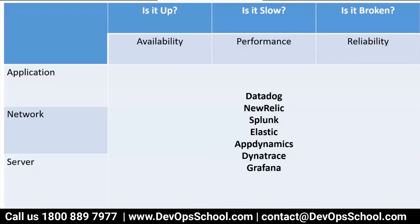The solutions available in the market for setting up observability cover application availability, network availability, server availability, application performance, application reliability, network performance, and server reliability. Tools include Datadog, New Relic, Splunk, Elastic, AppDynamics, Dynatrace, and Grafana. Today we are going to learn to set up observability using one of these tools — and this is the end of this conceptual session.